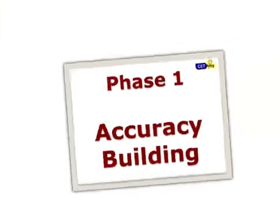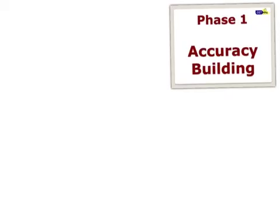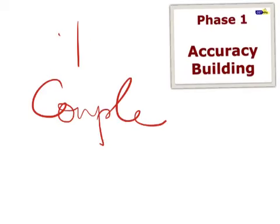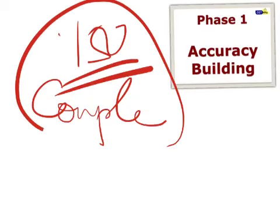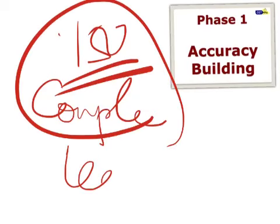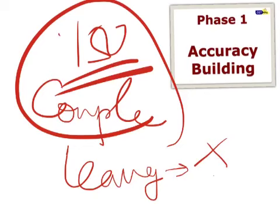We are in the accuracy building phase one of the mock exam. What I want you to do now is - you won't be able to complete the paper today. A 150 mark paper is impossible to complete. What I want you to do is strategize yourself in such a way that whatever you're leaving are those questions which you anyway were not able to solve.